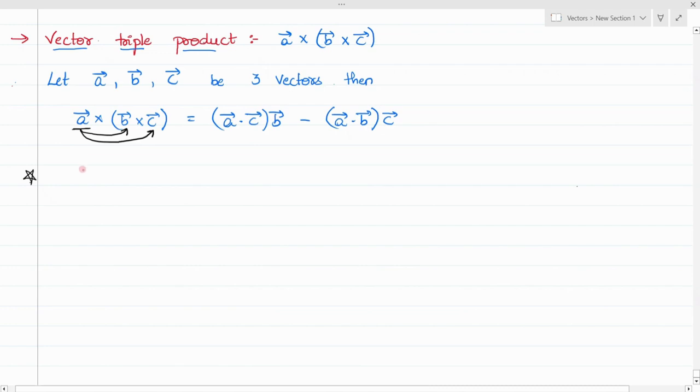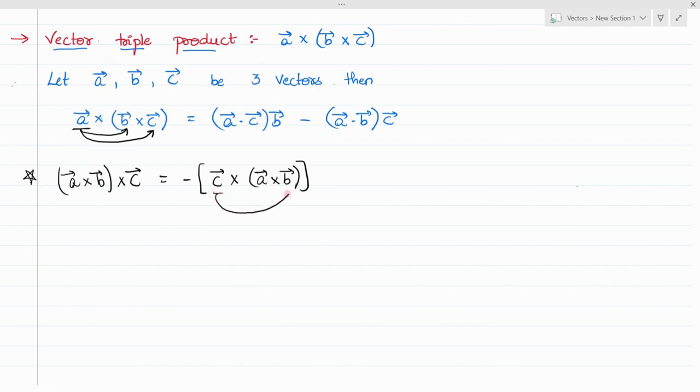A very important note over here is if it is like this, that is A cross B cross C, then we can use the same formula. First take the negative of this, that is C cross A cross B. Now again apply the same thing: first multiply C vector with the far value, which is C dot B, and write A as it is, minus C dot A and write B as it is.